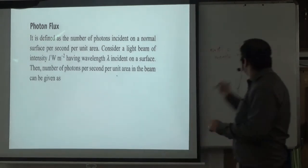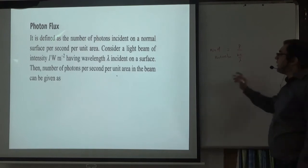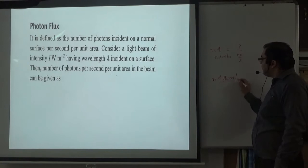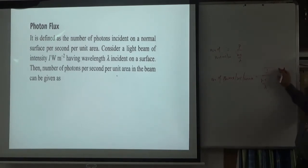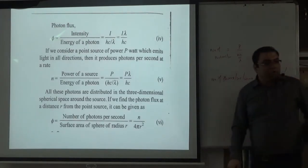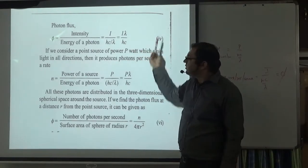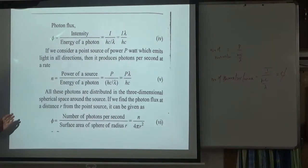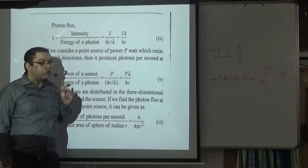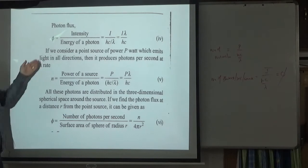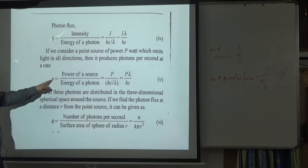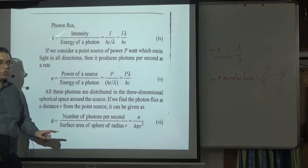Next: photon flux — number of photons incident on a normal surface per unit area per second. We divide intensity by energy per photon. Since intensity means energy per second per unit area, and total energy equals photon energy times number of photons, photon flux φ equals intensity divided by hc/λ. If you need photons per second only, divide power by hc/λ. Both formulas are important.